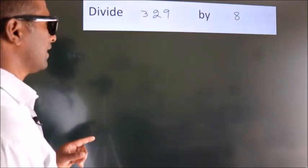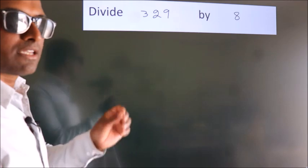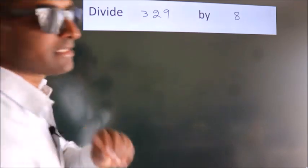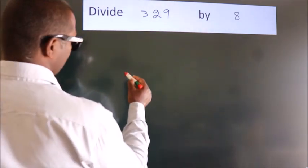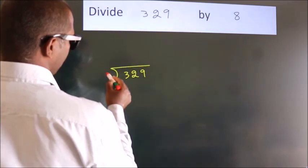Divide 329 by 8. To do this division, we should frame it in this way. 329 here, 8 here.